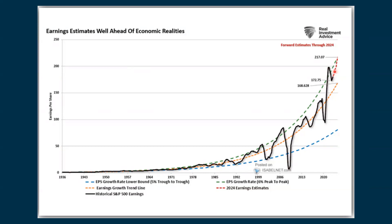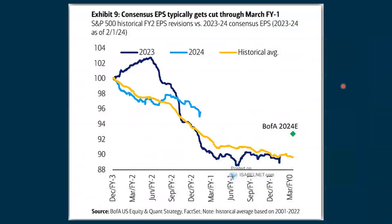This chart gives us an idea of where the S&P was based on historical earnings, and then what the projections are going forward. The key takeaway is that earnings projections are going up — they might be becoming unrealistic — but at the same time the market uses this to justify prices going higher.